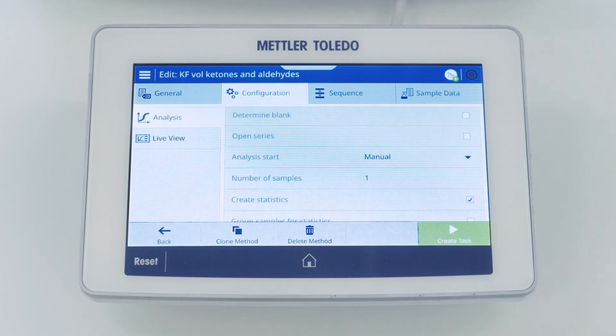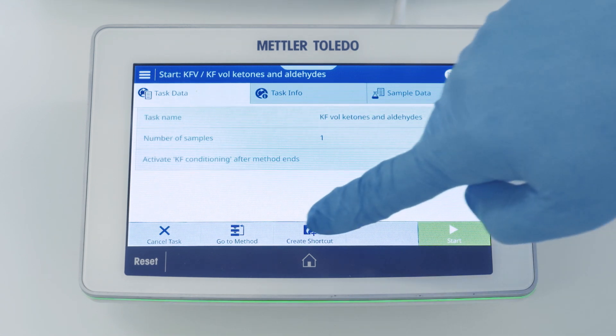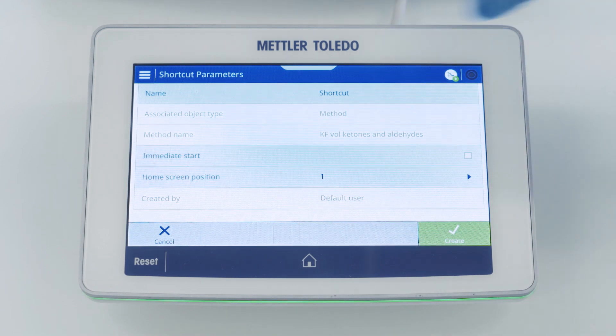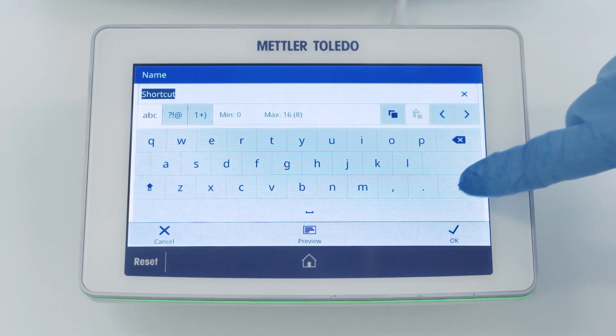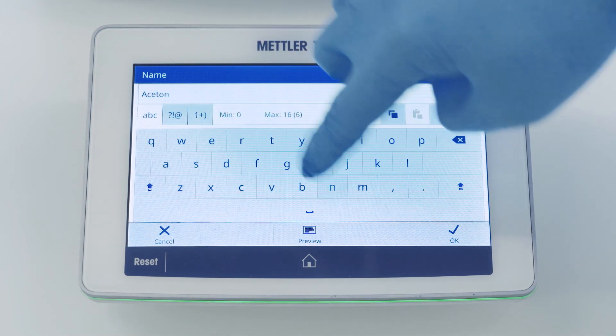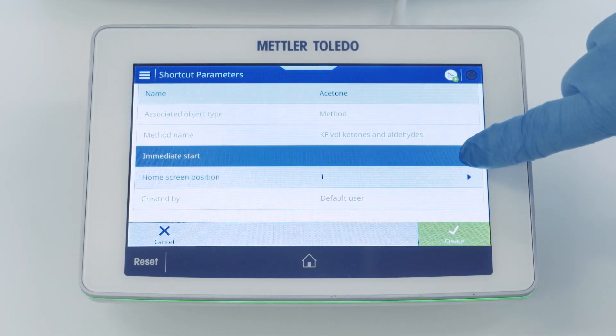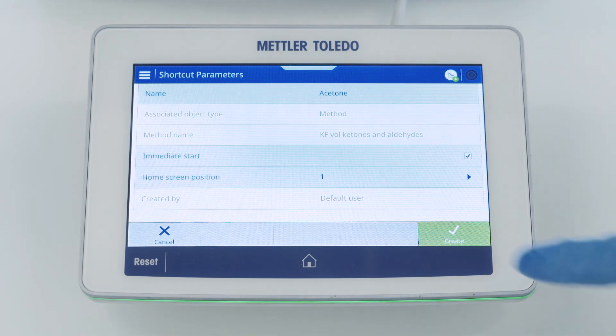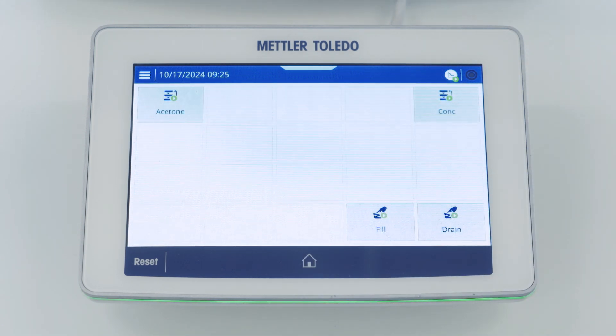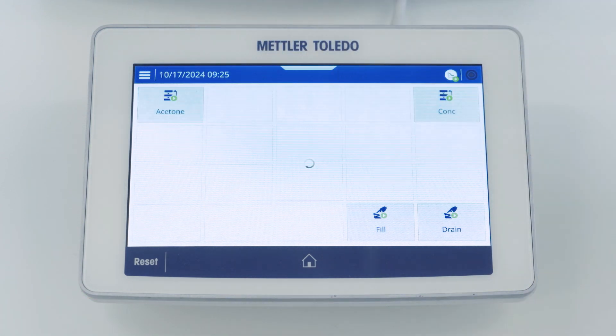Upon saving we create a method and to make it even easier we create a shortcut such that we can start the method from the home menu. We give a name to the shortcut, for example acetone, and we allow an immediate start of the method. Let's create the shortcut and go to the home menu. Now we can find the shortcut and start the method with one click.